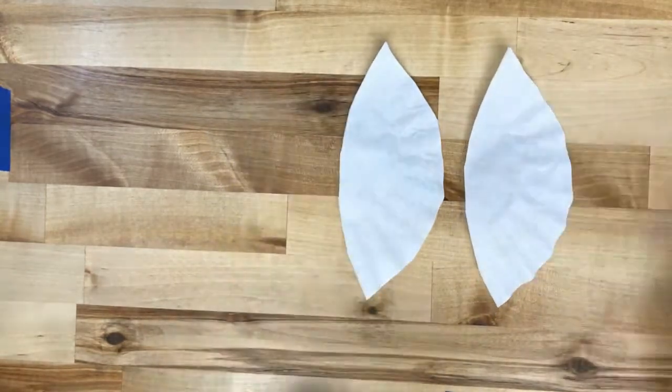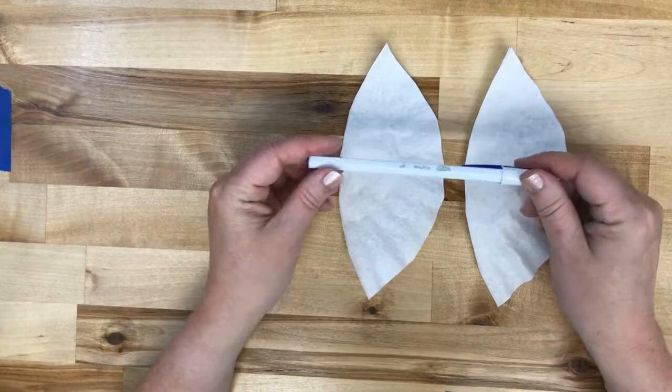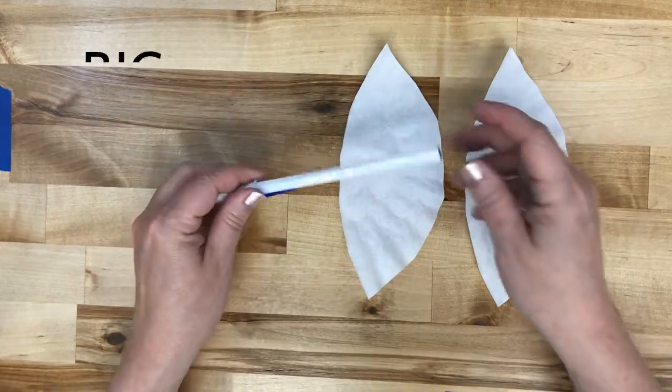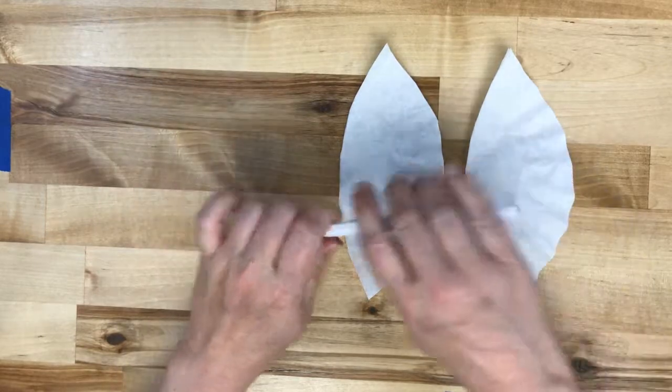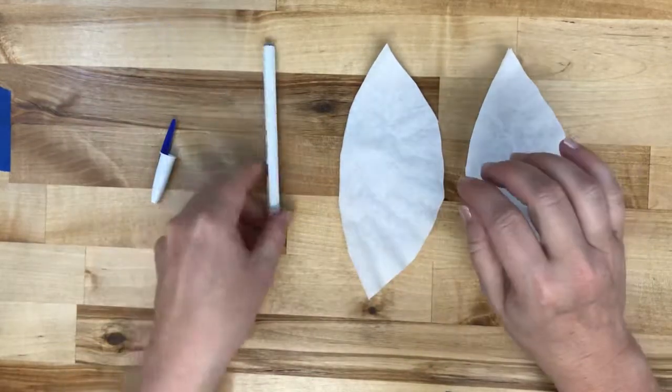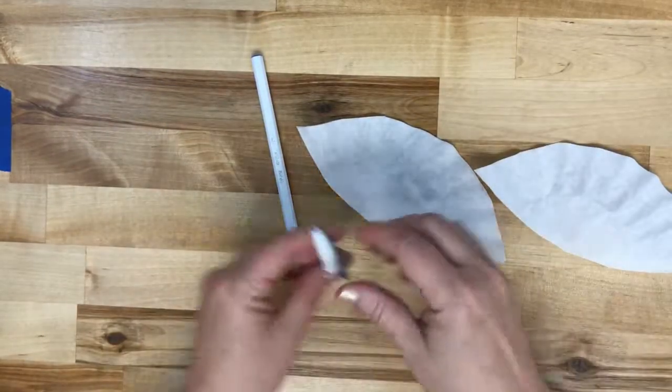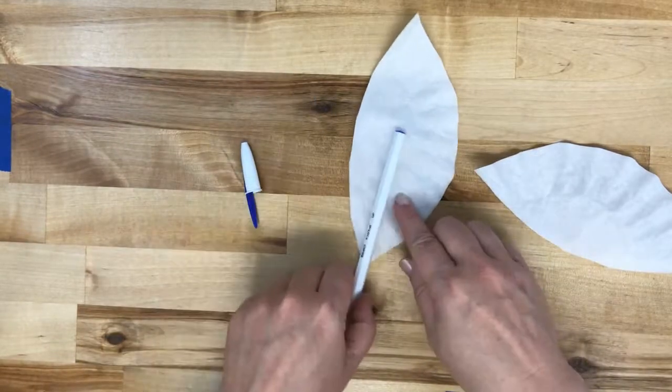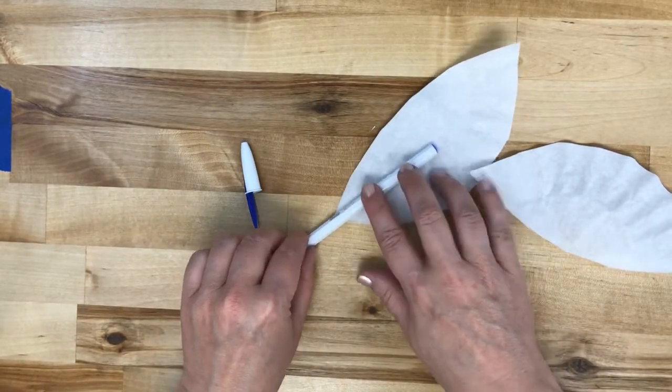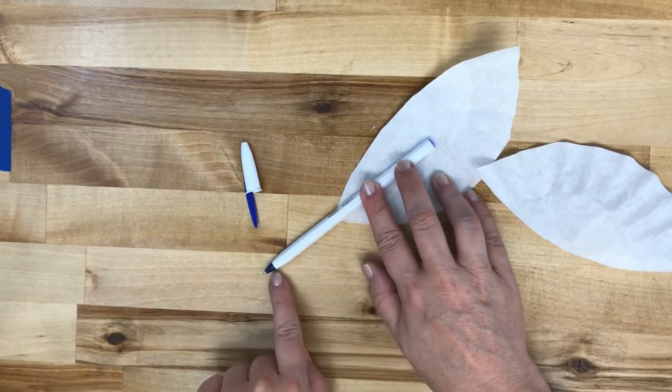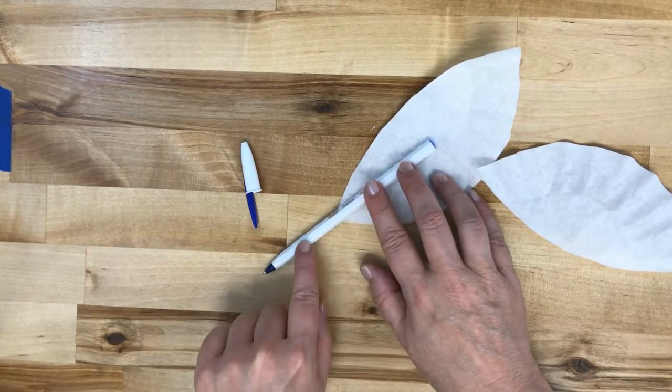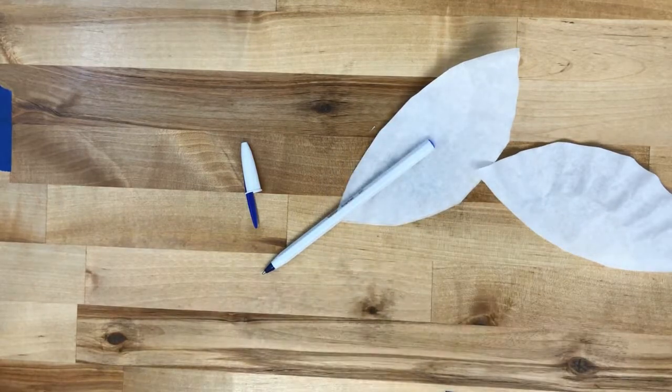For this one, we're going to go ahead and use a white pen. These are Bic Crystal Up pens. They're actually easier to find than white pencils. Take the pen cap off and lay it down on your feather. Make sure you leave enough for your hand to go here because you don't want to be grabbing the feather.